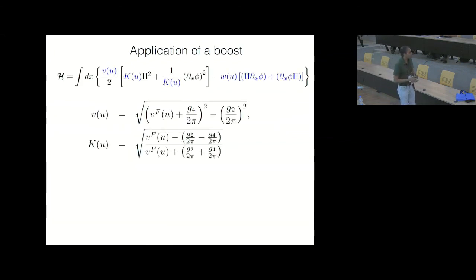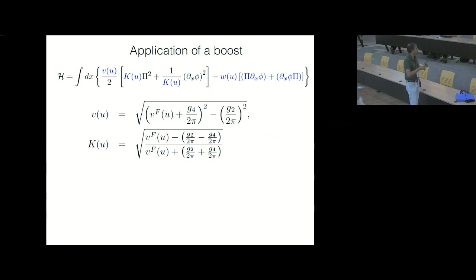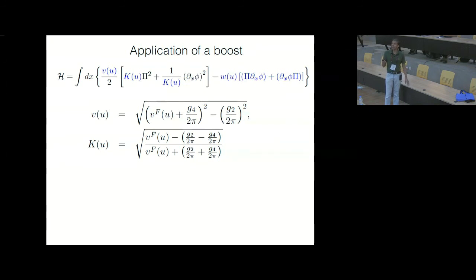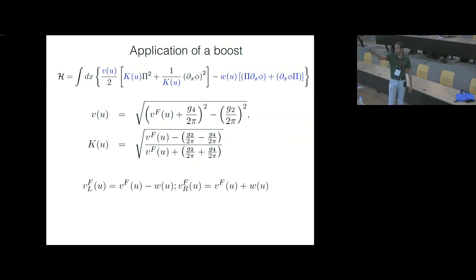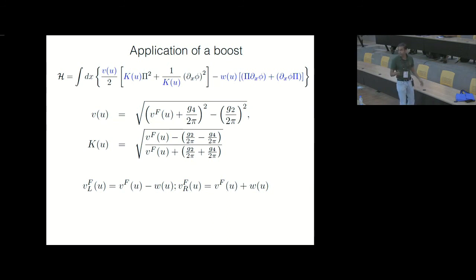So now you can ask: if you took every single fermion and changed its momentum by u, then linearized about the new Fermi points and looked at the bosonized theory, what would that look like? It turns out that you now have a coupling between the phi field and the pi field, and the velocity and Luttinger parameter also change — they have a dependence on the boost u through vf(u), which is basically the average of the speed of the left mover and right mover, and w(u) is the difference between the speed of the left mover and right mover.